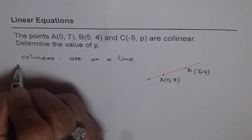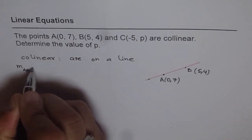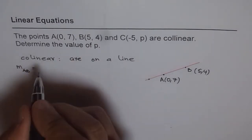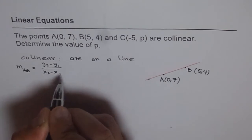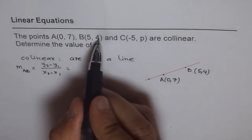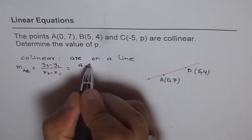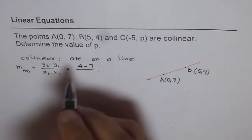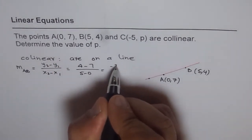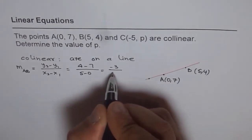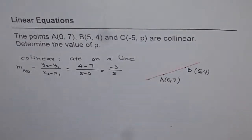So, let us find the equation of a line through A and B. First thing is, let us find the slope. Slope between A and B is y2 minus y1 divided by x2 minus x1. Now, in this case, y2 is 4. So, we get 4 minus 7 divided by 5 minus 0. 4 minus 7 is -3, and 5 minus 0 is 5. So, slope is -3/5.